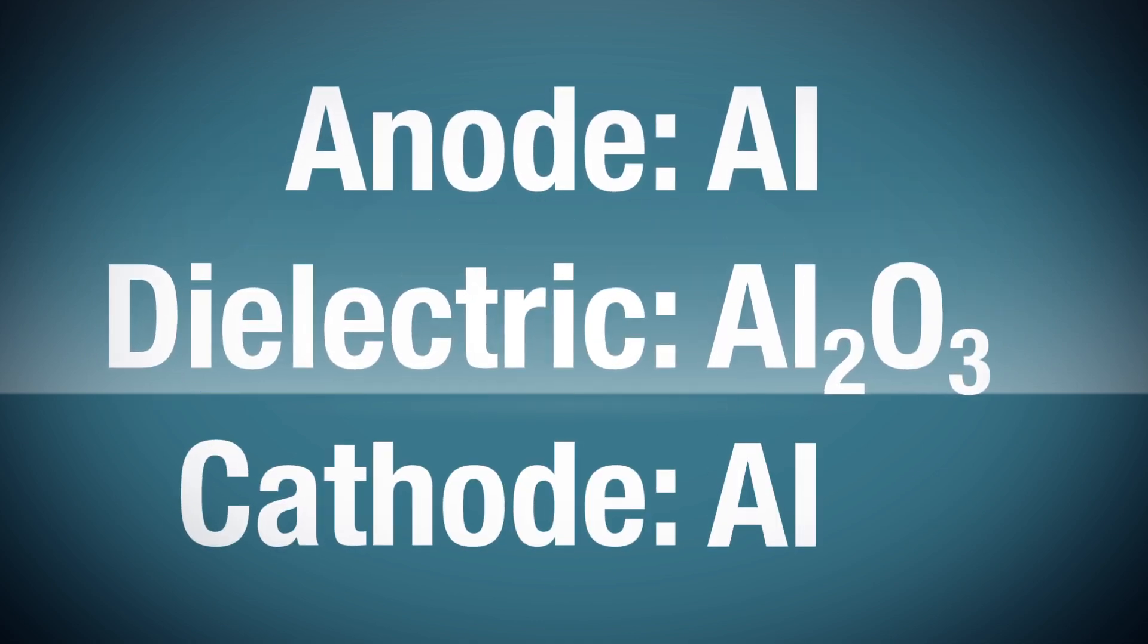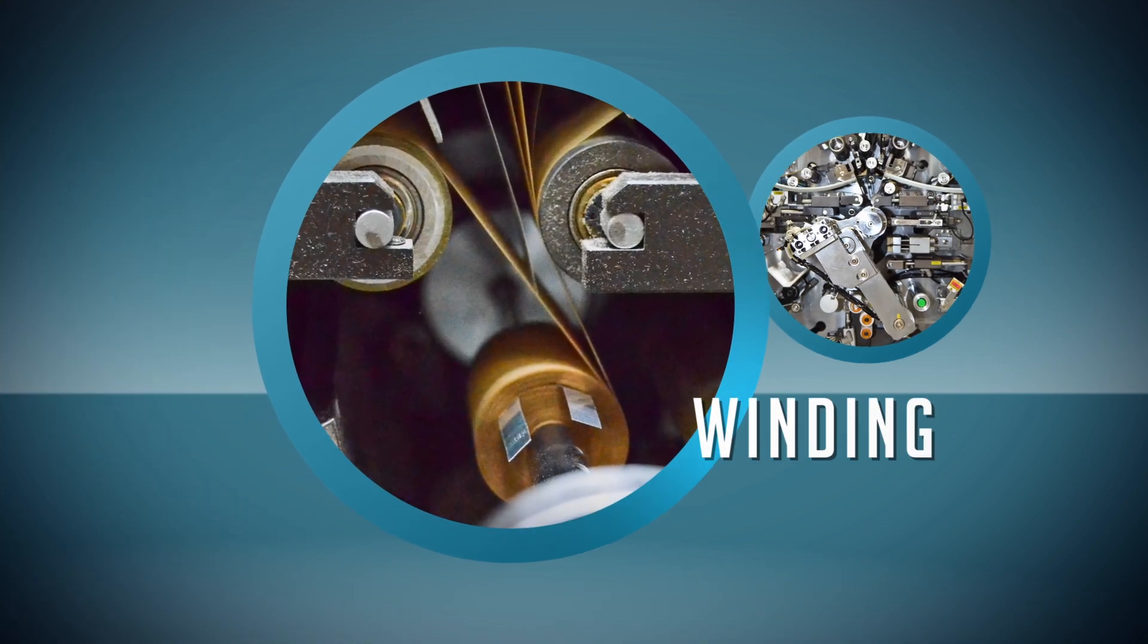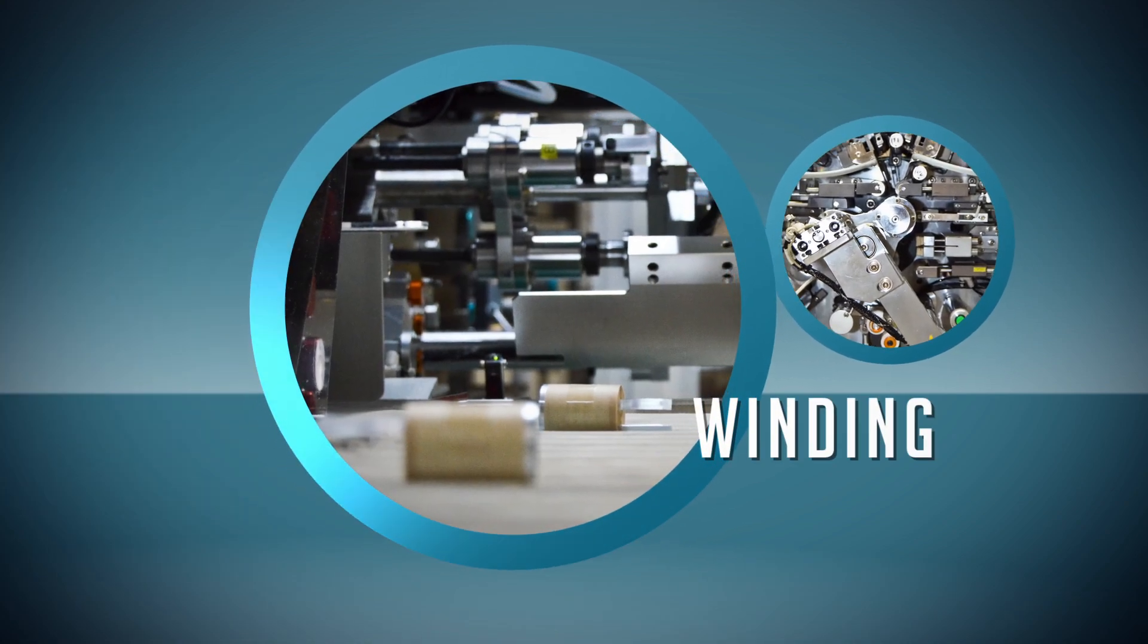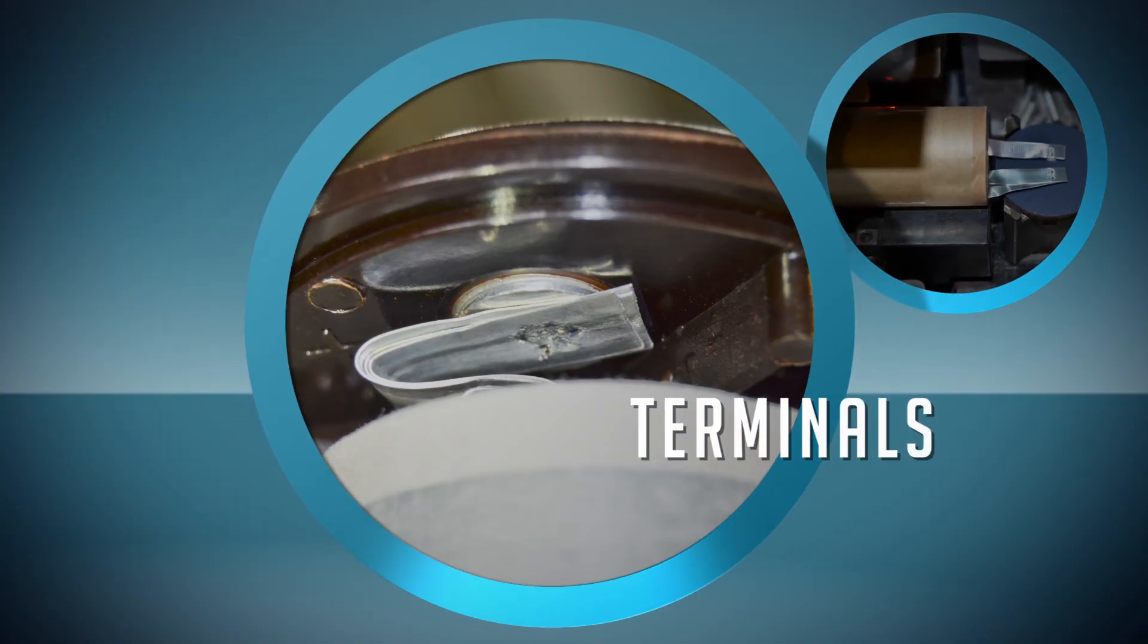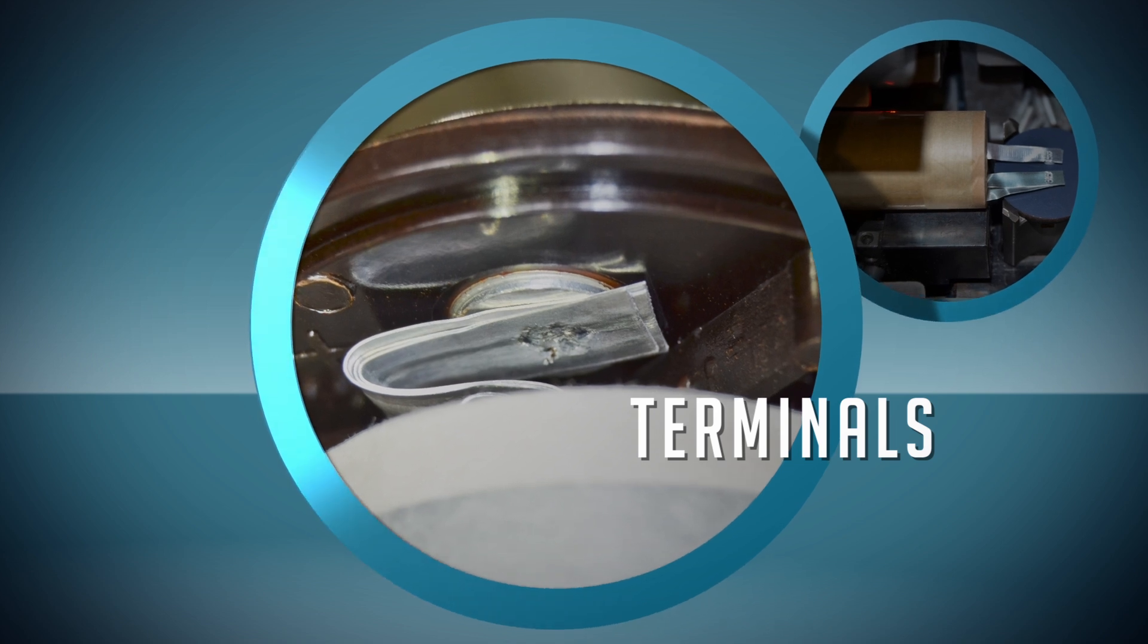The cathode layer also uses aluminum foil. We create a winding with the anodized anode foil and cathode foil separated by a paper layer. As the foils are wound, connection tabs are welded into place and then connected to the underside of a terminal deck.